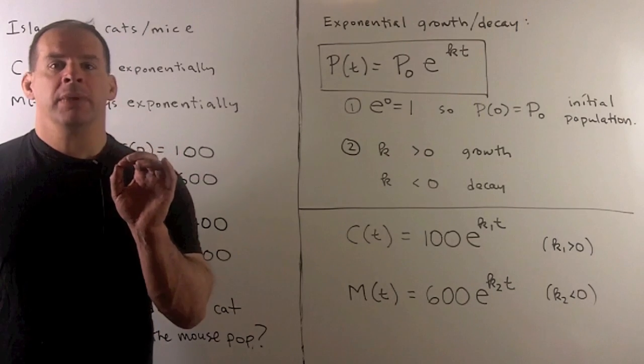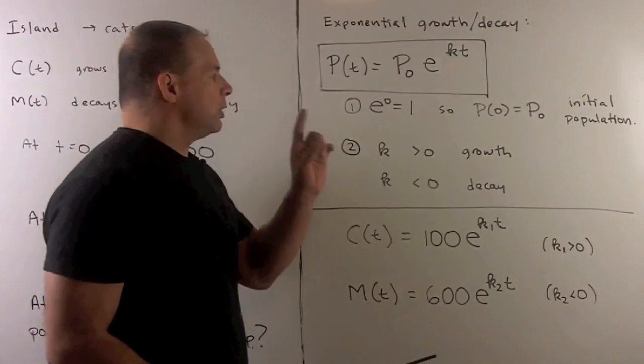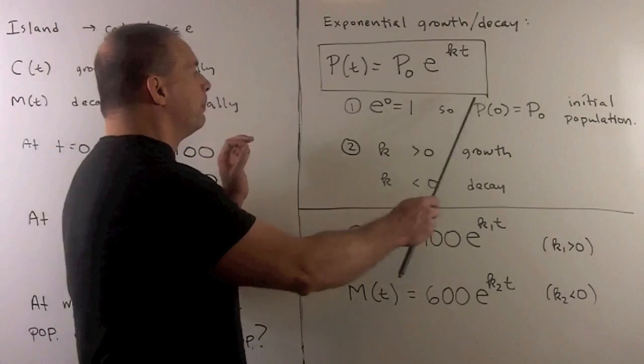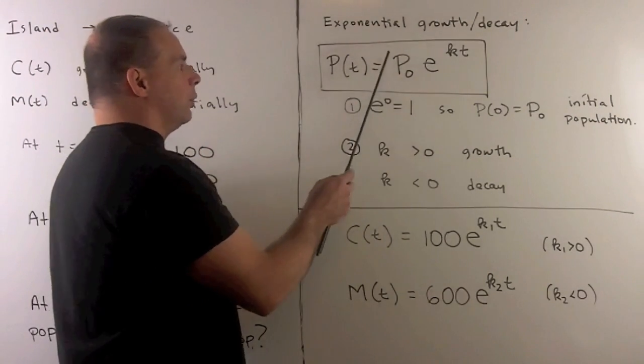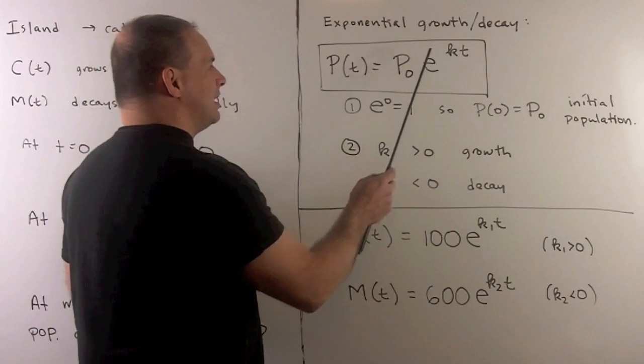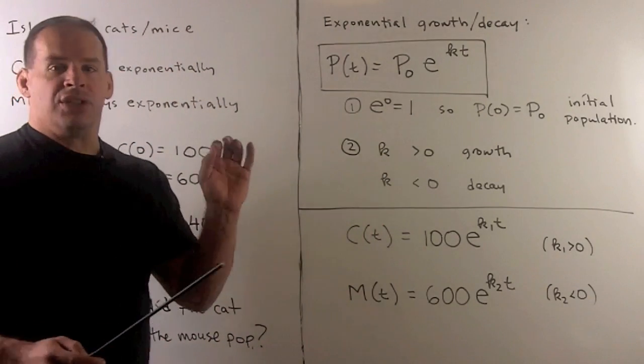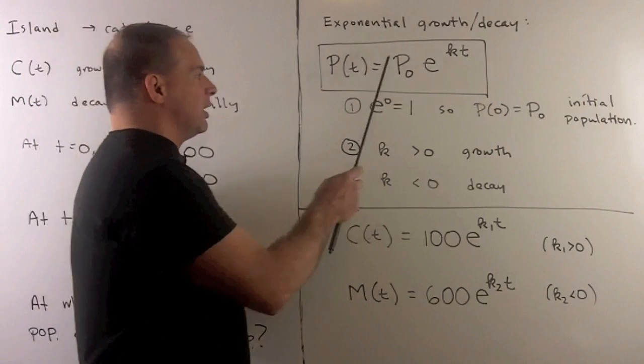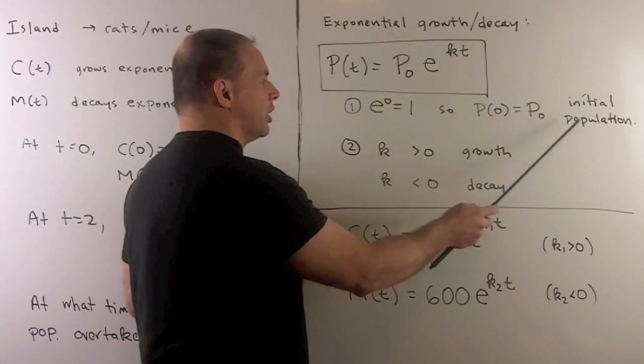The key idea here is our model for exponential population growth. Once we know that, we can write down a formula. It would be the form, our population at time t is equal to P₀ times e to the kt. Because e to the zero is equal to one, P₀ is just going to be our population at time t equals zero. So it's our initial population.